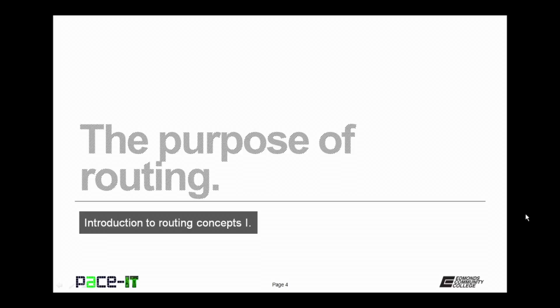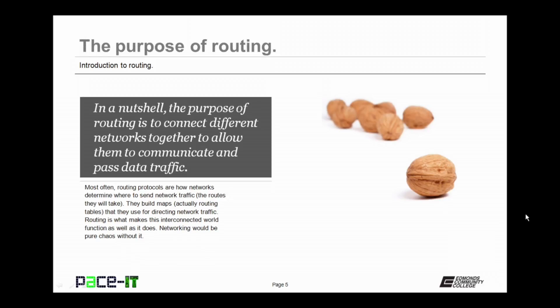First up is the purpose of routing. The basic purpose of routing is to connect different networks together to allow them to communicate and pass data traffic between them. Most often, routing protocols are how networks determine where to send network traffic — that's the routes that they will take.